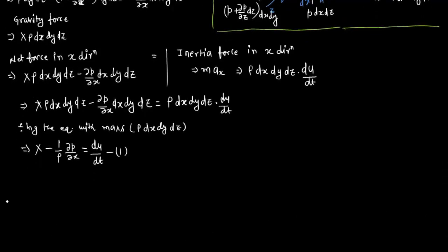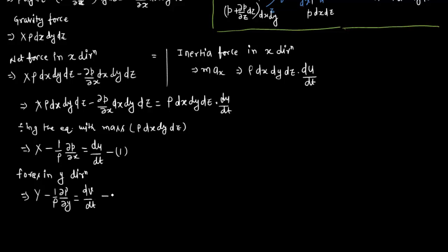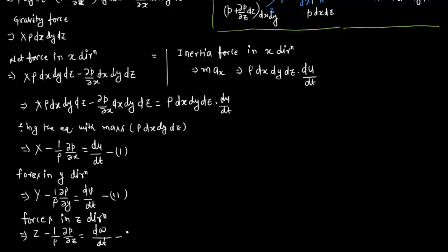Similarly, forces in the y-direction give: Y − (1/ρ)·(∂p/∂y) = dv/dt. And forces in the z-direction give: Z − (1/ρ)·(∂p/∂z) = dw/dt. These are our three equations for forces in the x, y, and z directions.